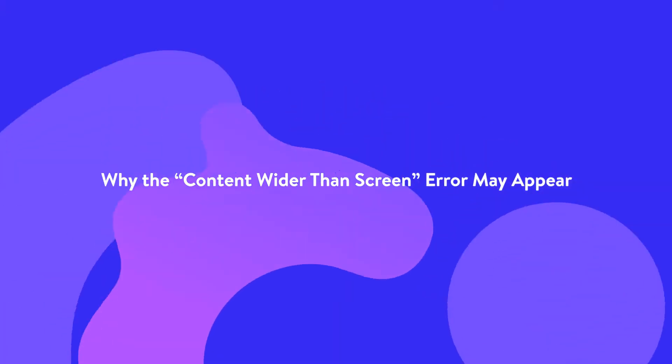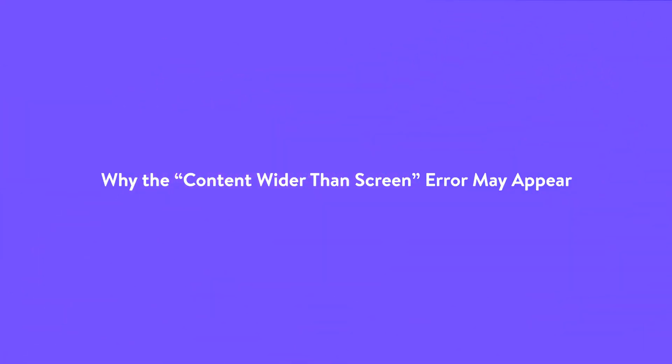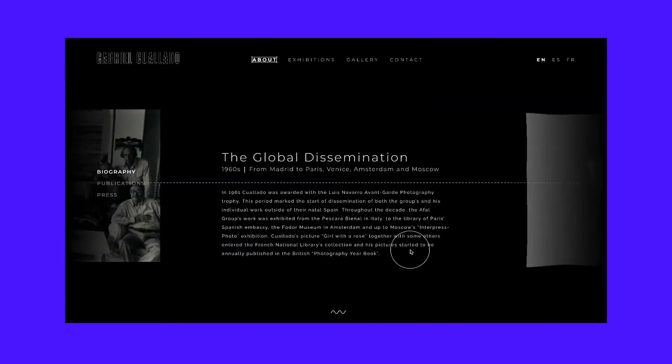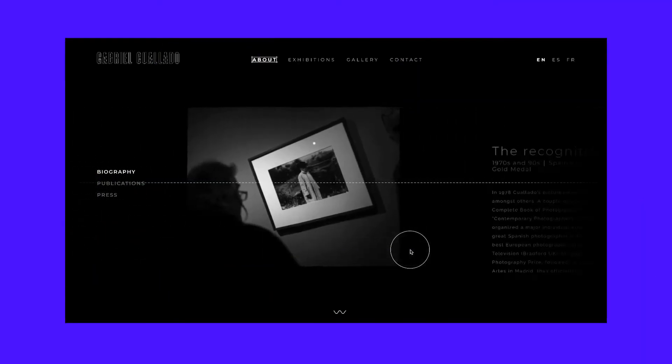This error occurs when your site design expands horizontally, forcing mobile users to swipe sideways to view the off-screen content. To provide a good user experience, you should avoid horizontal scrolling wherever possible. You're more likely to encounter the Content Wider Than Screen issue if you use absolute values in your CSS declarations.